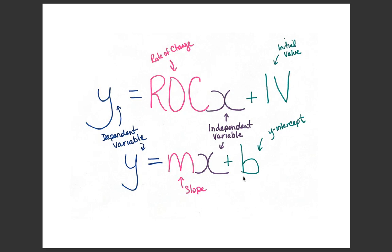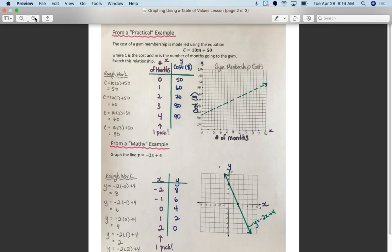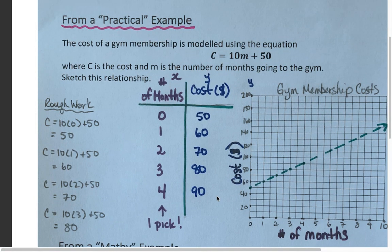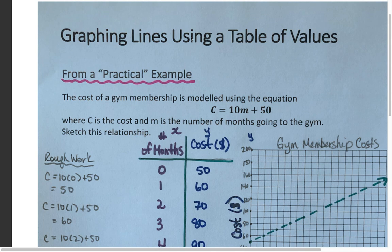From now on, moving forward in this course and in your future math courses, when you see the variable m, you'll know we're talking about slope, and when you see the variable b, you'll know we're talking about the y-intercept of the line. What we're going to do today is look at strategies on how to take equations of lines and graph them. The strategy we're going to focus on today is called the table of values method. We'll start with a practical example, then move into one that's more algebraic.